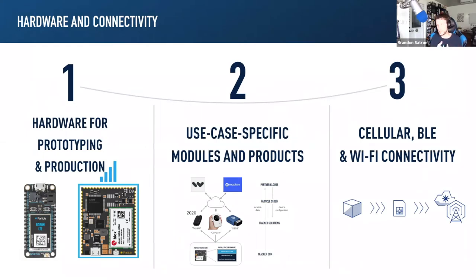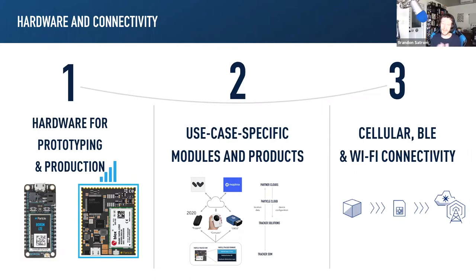For hardware and connectivity, we provide hardware designed to help you prototype your ideas and easily scale to production. We can create devices used for prototyping, and through our ecosystem, very easily transition into mass production modules that can scale out your solutions. We also provide use case-specific modules for things like asset tracking, and connectivity support for cellular, Wi-Fi, and Bluetooth.